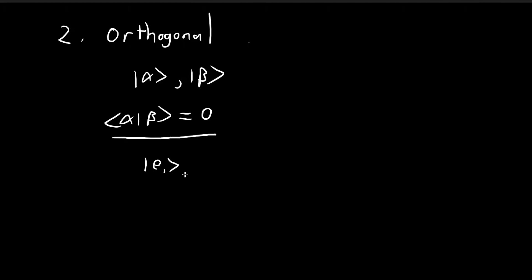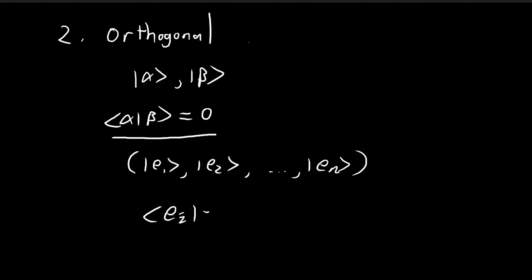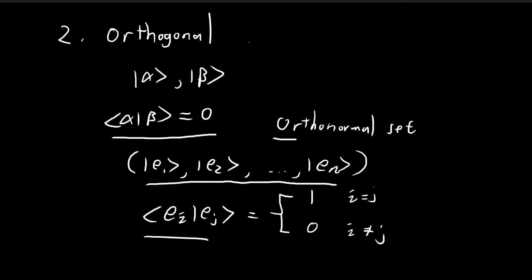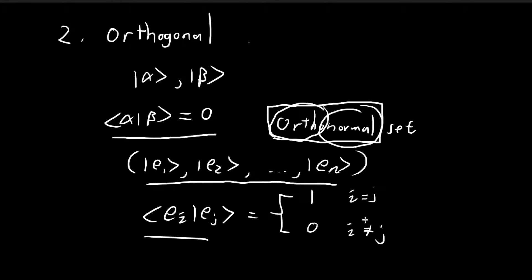If we have a set of vectors e1, e2, all the way to en, and the inner product is defined such that the inner product between ei and ej equals 1 when i equals j and equals 0 when i does not equal j, then I would say this set is an orthonormal set. The 'ortho' comes from the inner product being zero when i ≠ j, and the 'normal' comes from the inner product being 1 when i = j. We can express this more concisely with the Kronecker delta function, where delta equals 1 if i equals j and 0 otherwise.